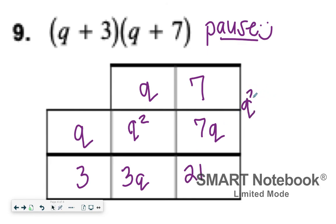So combining like terms, Q squared by itself, seven Q and three Q both give me 10 Q. And 21 is by itself, so plus 21. So my answer for number nine will be Q squared plus 10 Q plus 21.